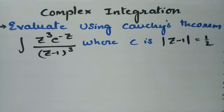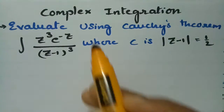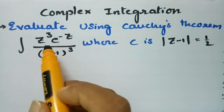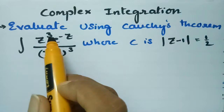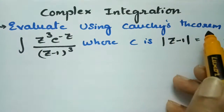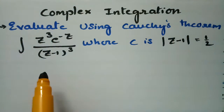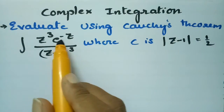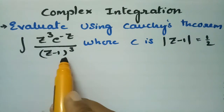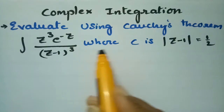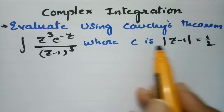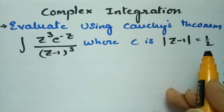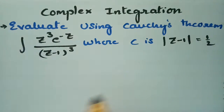Today's video I am going to evaluate a problem from complex integration. I will evaluate using Cauchy's theorem the integral of z³e^(-z) divided by (z minus 1)³, where c is the curve given by modulus of z minus 1 equals one half.